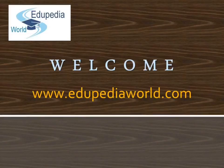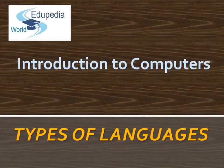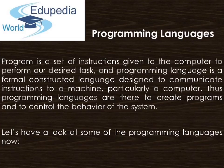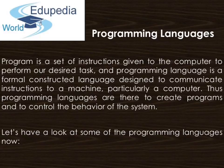Hello world, welcome to edupediaworld.com. In this video we are going to cover some types of programming languages. A program is a set of instructions given to the computer to perform our desired task. A programming language is a formal constructed language designed to communicate instructions to a machine, which particularly is a computer. Thus programming languages are there to create programs and to control the behavior of the system.